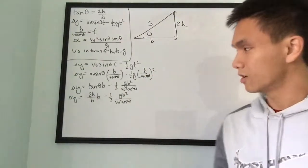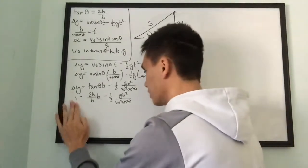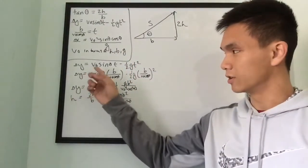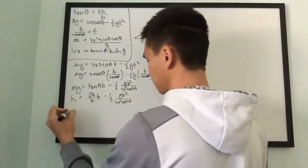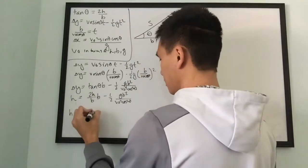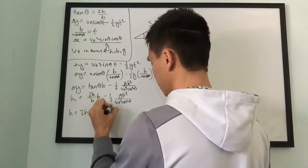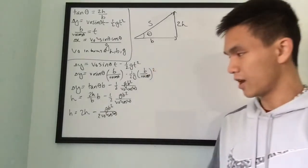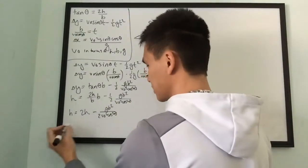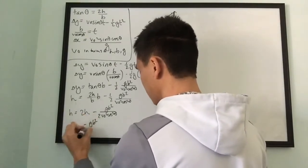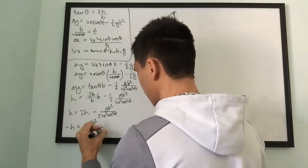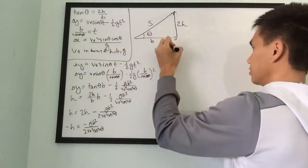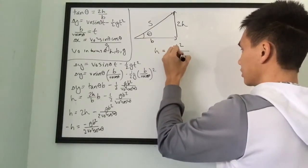Delta-y became h in our original equation, so h equals 2h minus g·b² over 2·v-naught²·cosine²(θ). Subtracting 2h from both sides: negative h equals negative g·b² over 2·v-naught²·cosine²(θ). The negatives cancel, giving h equals g·b² over 2·v-naught²·cosine²(θ). We're almost there — just one annoying trig function left.